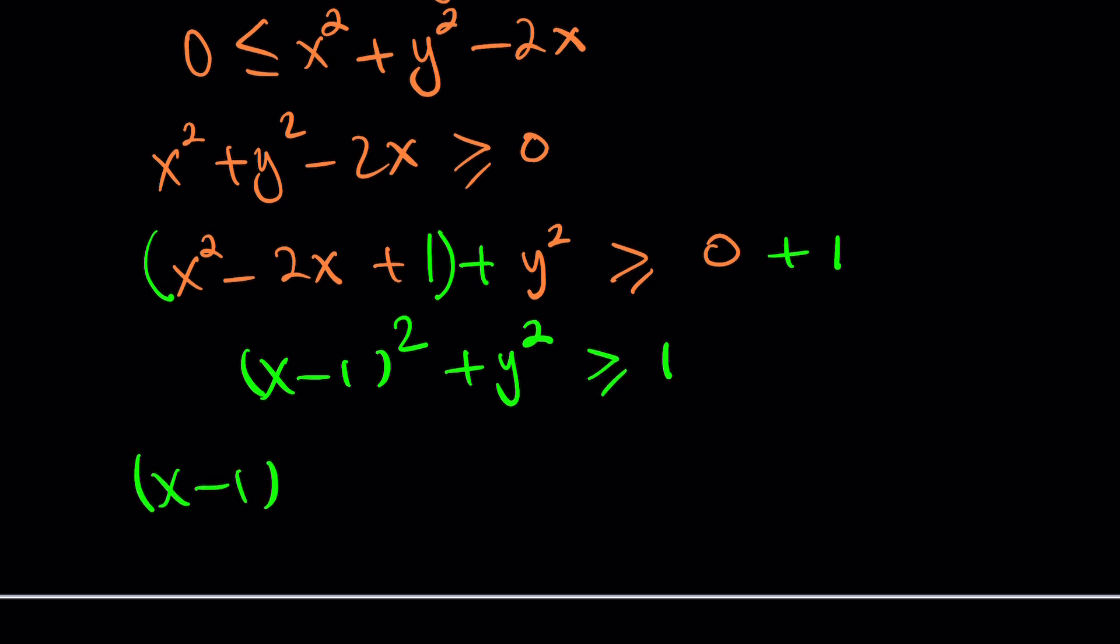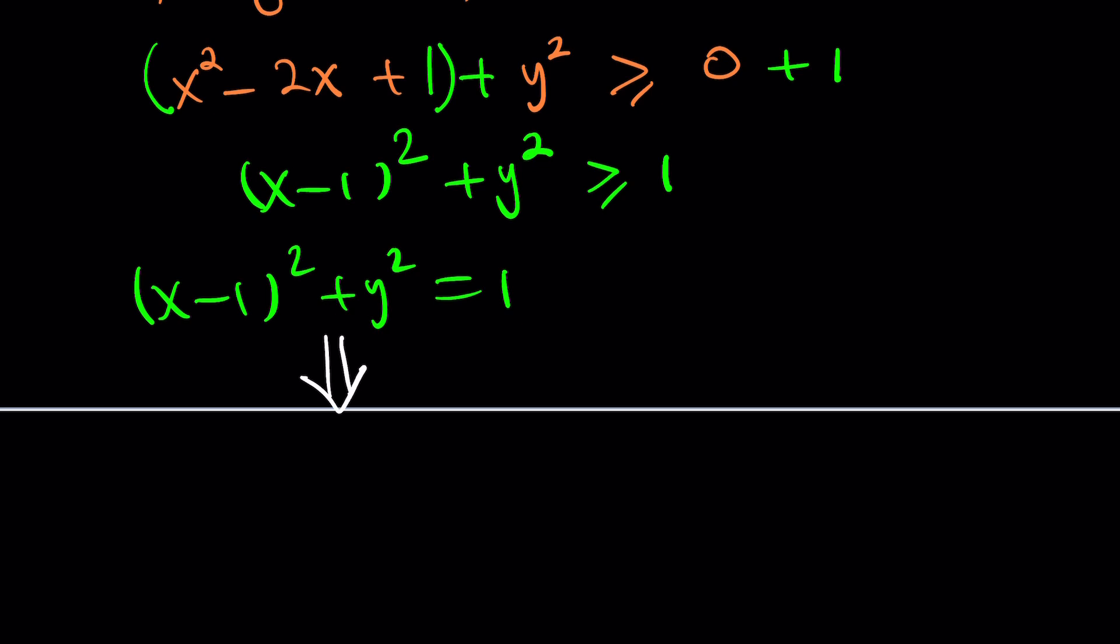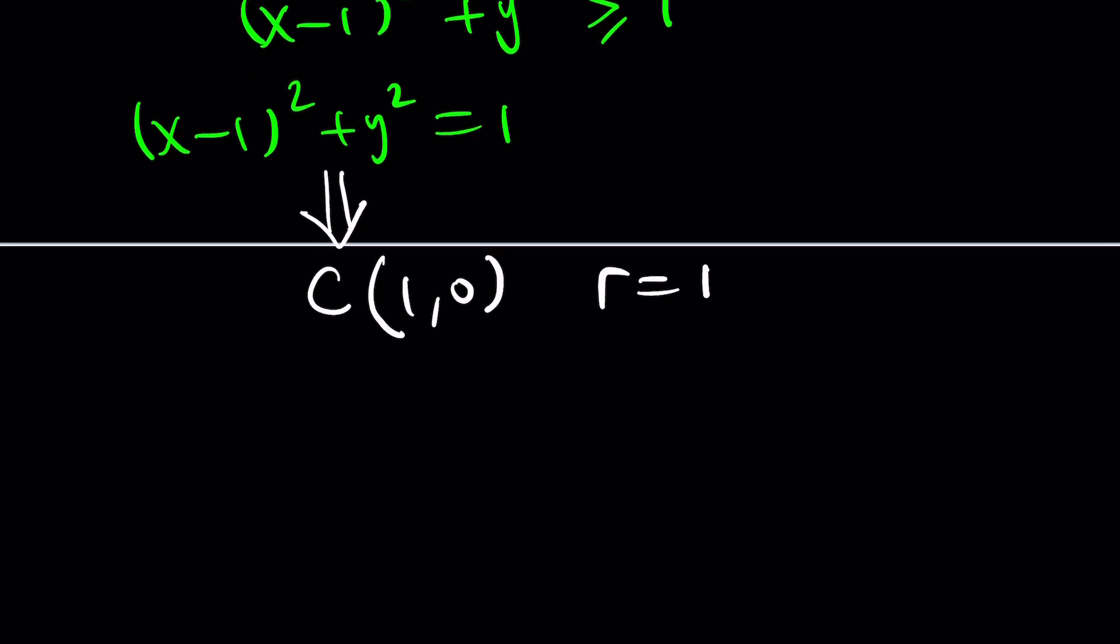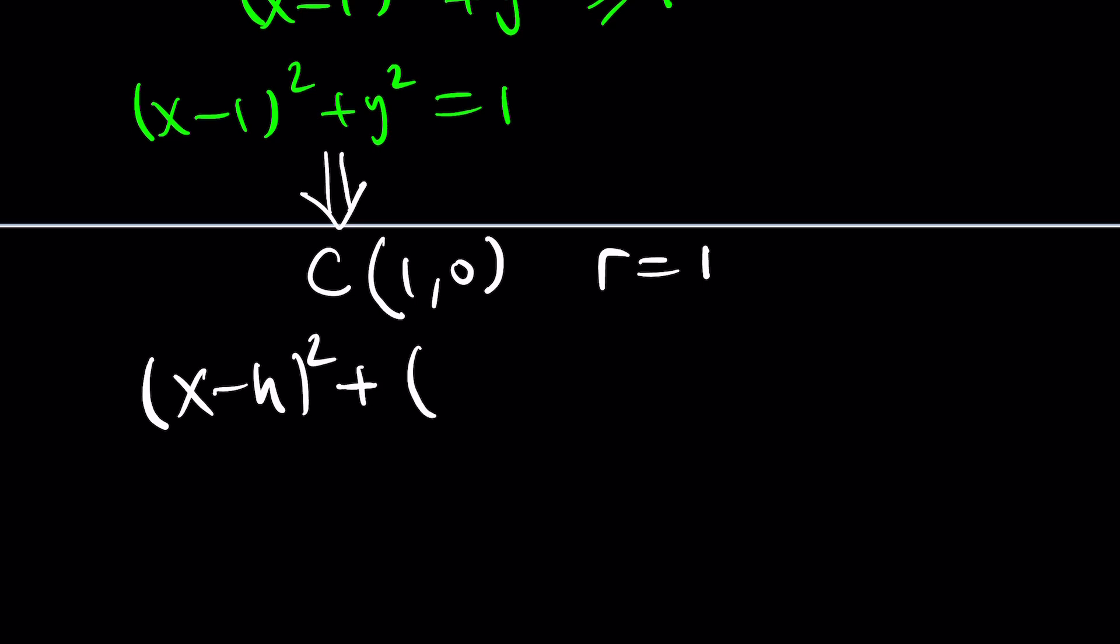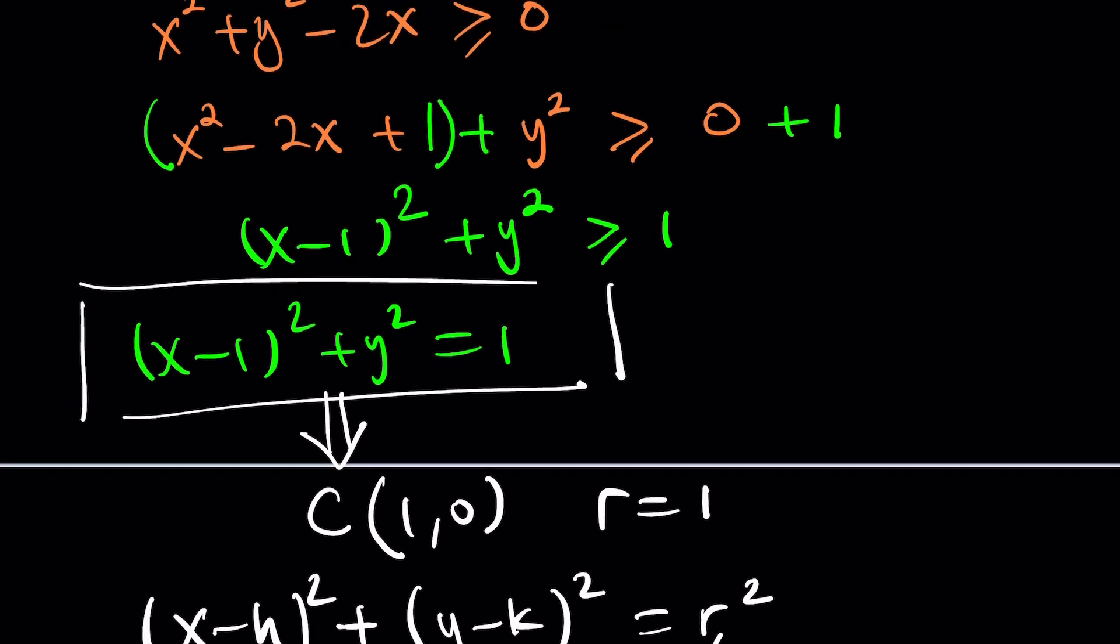Now, if you had this, what would that be? This would be a circle. Yes, still a circle. Because this would be a circle with center at one comma zero and radius is one. How do I know that? The general formula, let me write it down. X minus H quantity squared plus Y minus K quantity squared equals R squared. The center is going to be at H comma K and R is the radius. That's the equation of a circle. And this is the equation of a circle. But we are looking at something that is greater than this. So is it inside the circle or outside the circle?